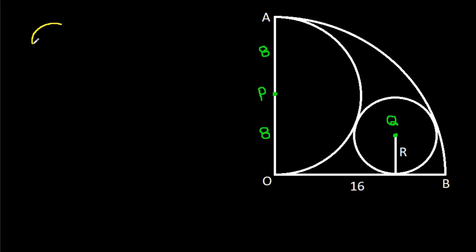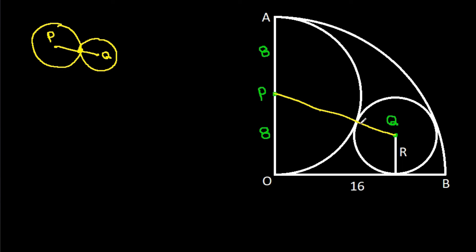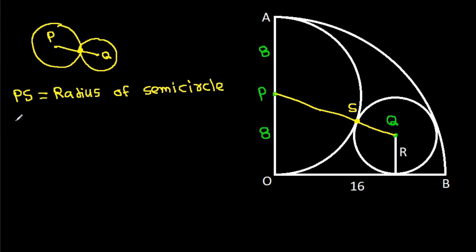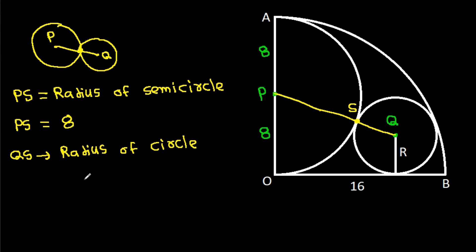Now, if we have two touching circles, suppose the centres are P and Q, and if we join PQ, then it will pass through the common point of contact. So here, if we join PQ, it will pass through this point. Suppose S, and PS is the radius of the semicircle, so PS will be 8. And QS is the radius of the circle, so QS will be r.